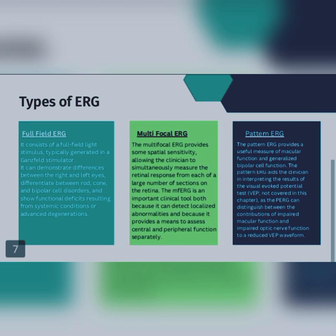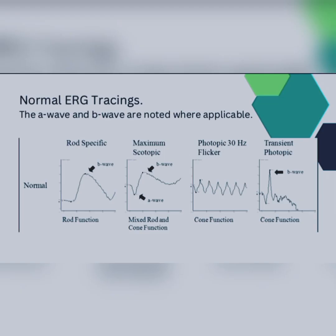Multifocal ERG provides some spatial sensitivity, allowing the clinician to simultaneously measure the retinal response from each of a large number of sections on the retina. Pattern ERG provides a useful measure of macular function and generalized bipolar function. You can see the ERG tracings: the normal one, the rod-specific, the B wave, the maximal-scopic showing the A wave and B wave, the photopic 30 Hz flicker showing cone function, and the transient photopic B wave in the cone function.